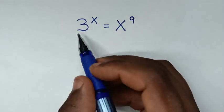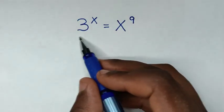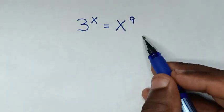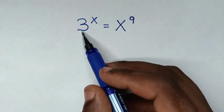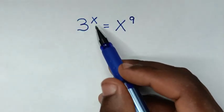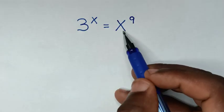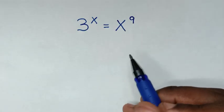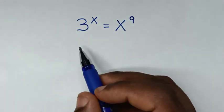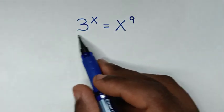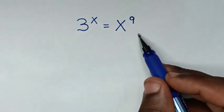Hello, you are welcome to solve this math problem, which is 3 to the power of x is equal to x to the power of 9. We need to find the value of x from this equation.